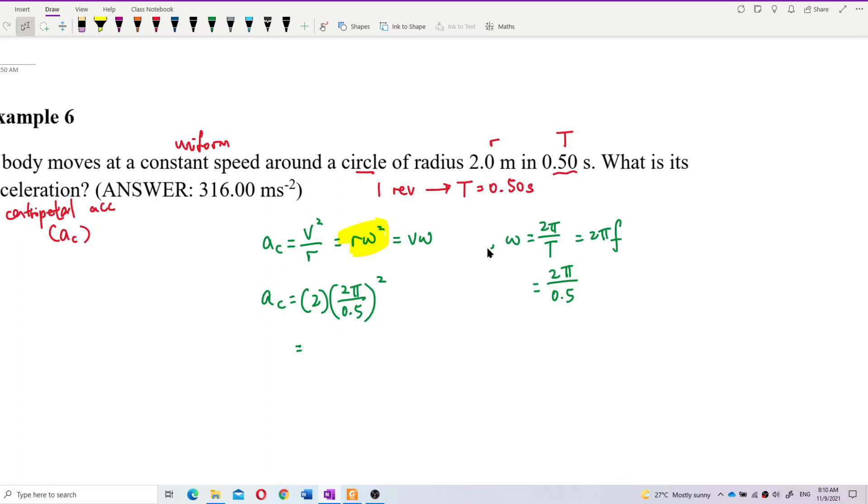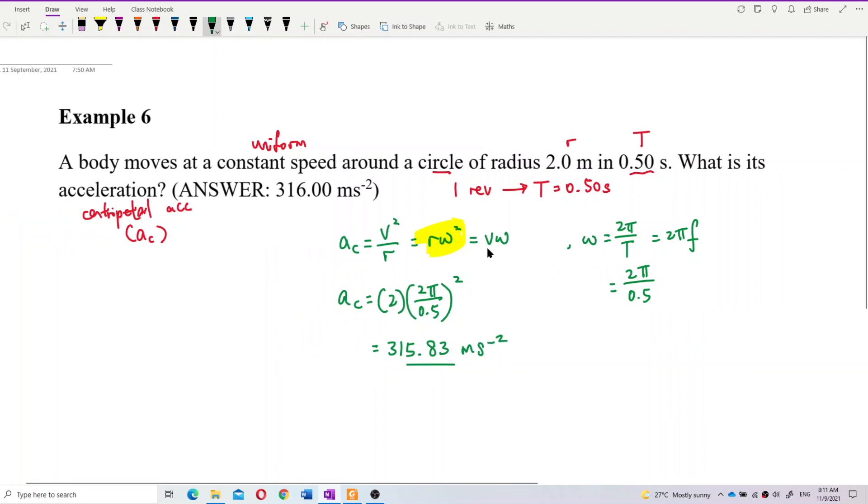So what's the answer? The AC is 315.83 meter per second squared. So that's the answer.